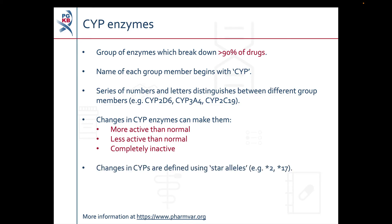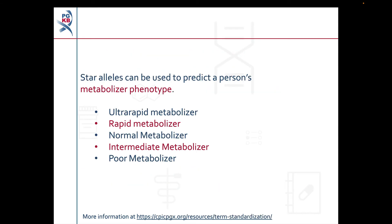Star alleles are used to define known genetic changes in CYP enzymes. Some example star alleles of CYP2C19 include star 2 and star 17. Just like genotypes, people typically have two star alleles for each CYP gene. Some genes which aren't CYPs also use this star allele system, and future videos will discuss star alleles in more detail. The combination of star alleles that a person has for a particular gene can be used to predict how much enzyme activity they have. This is called their metaboliser phenotype.